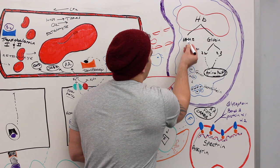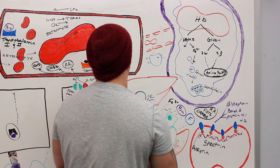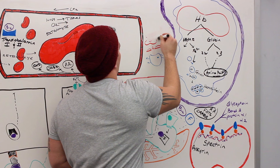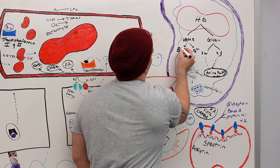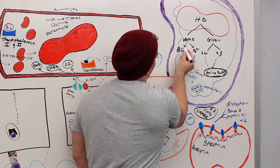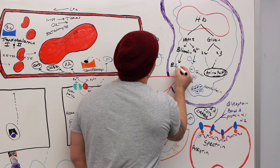Now, what happens to the heme itself? The other part gets broken down into what most people commonly know as bilirubin — but that's eventually. First, it actually gets broken down into biliverdin. Then biliverdin gets broken down into bilirubin.